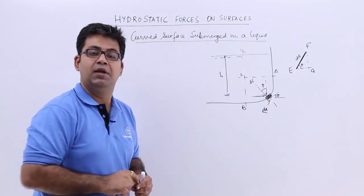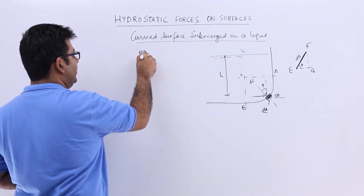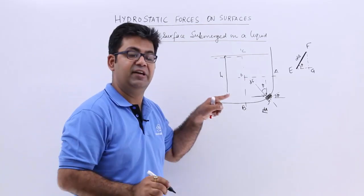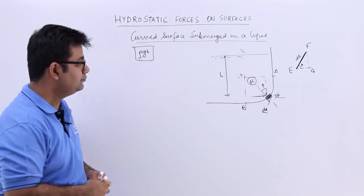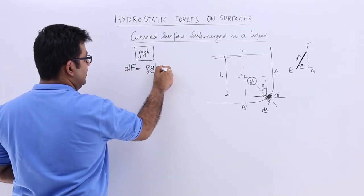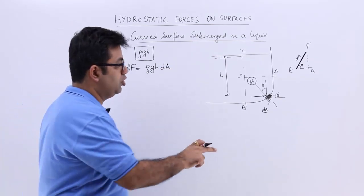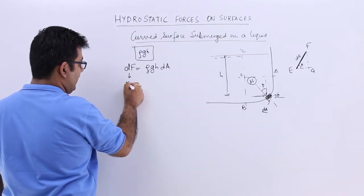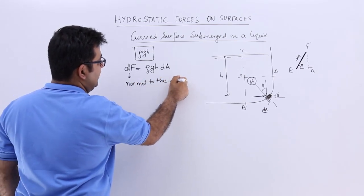The pressure on this small elementary area dA would be rho g times h. This pressure gives a pressure force dF on the small elementary area, so dF equals rho g h times dA. This dF, the elementary force on this elementary area, is perpendicular — normal — to the surface or normal to the elementary area.